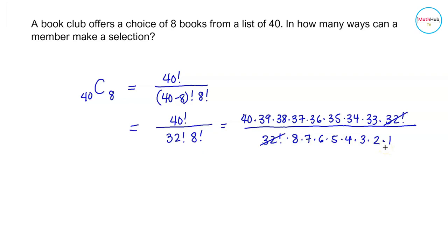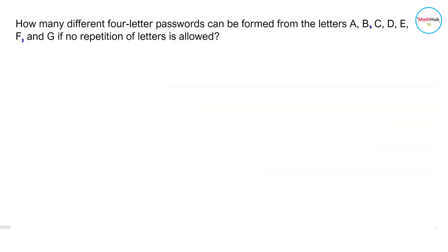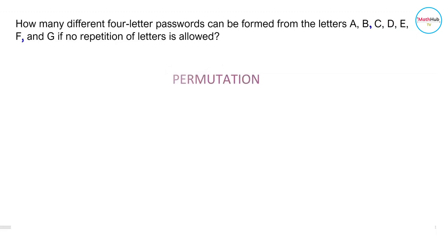Multiply the numbers in the numerator divided by the numbers in the denominator using your calculator to get the answer. Next problem: how many different four-letter passwords can be formed from the letters A, B, C, D, E, F, and G if no repetition of letters is allowed? Since we are forming passwords, the ordering in which the letters appear is important, so this is a problem on permutation.